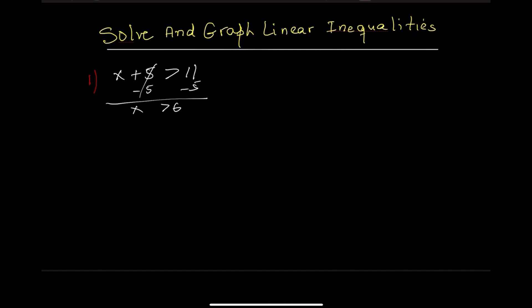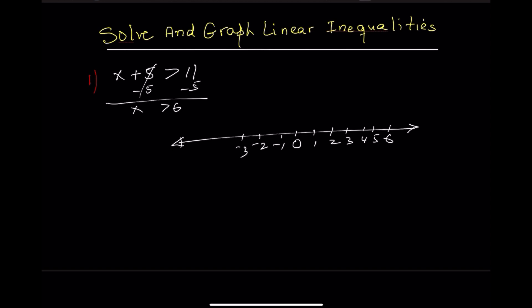Now let's graph this solution. Begin by drawing a number line — a straight horizontal line. Mark 0 in the center. To the right of 0 are the positive numbers: 1, 2, 3, and so on. To the left of 0 are the negative numbers: negative 1, negative 2, and so on. Now go to 6 on the number line. Because the inequality sign is greater than and does not include 6, we use an open circle at 6. Then we draw an arrow to the right to show all numbers greater than 6. This is how we show the solution visually.